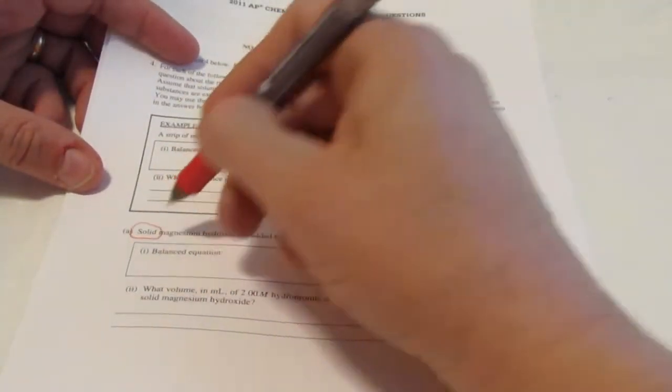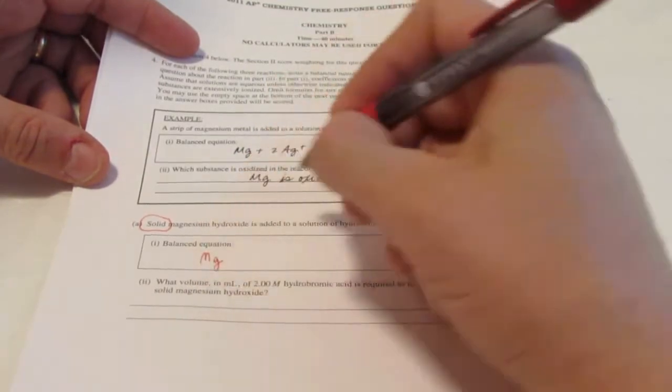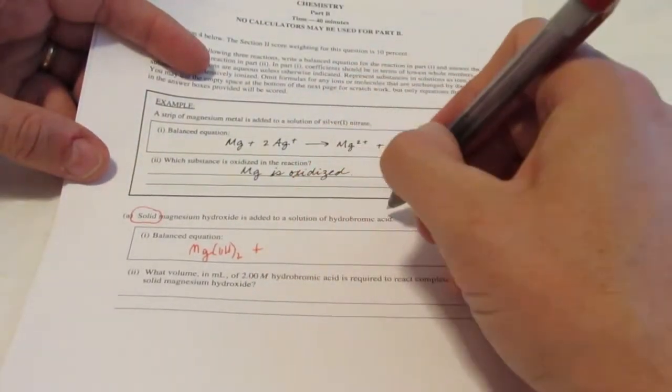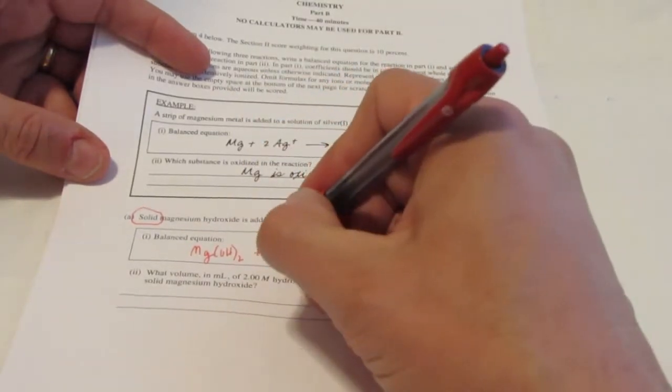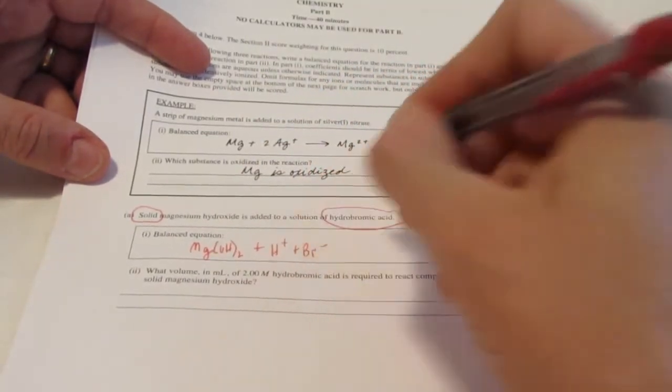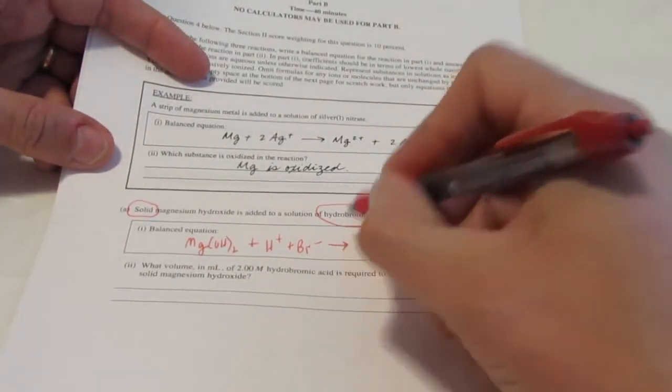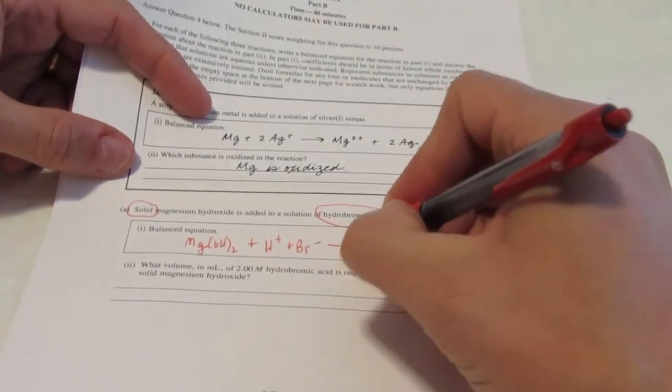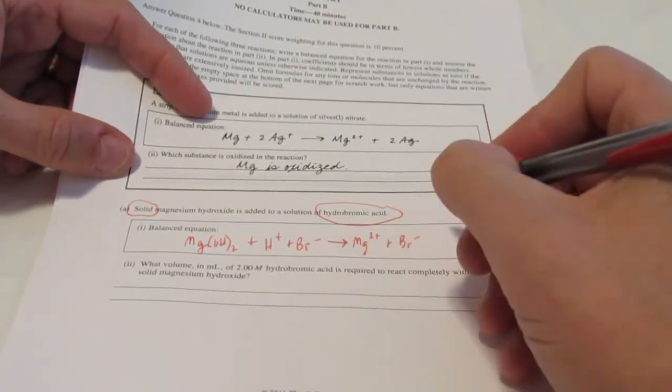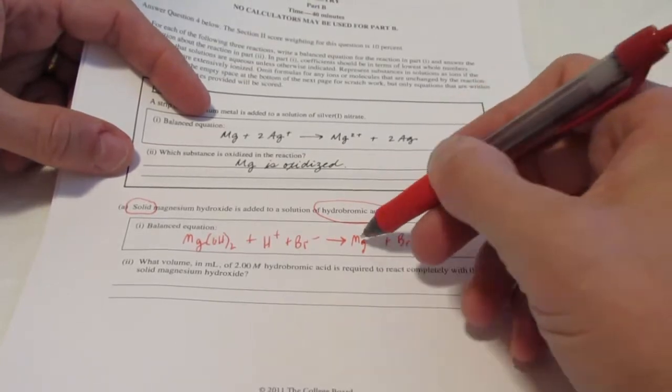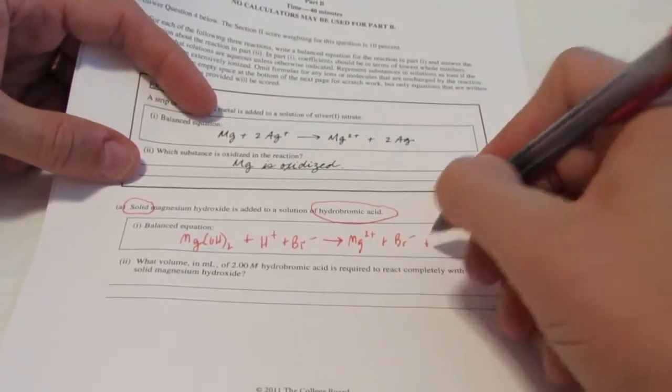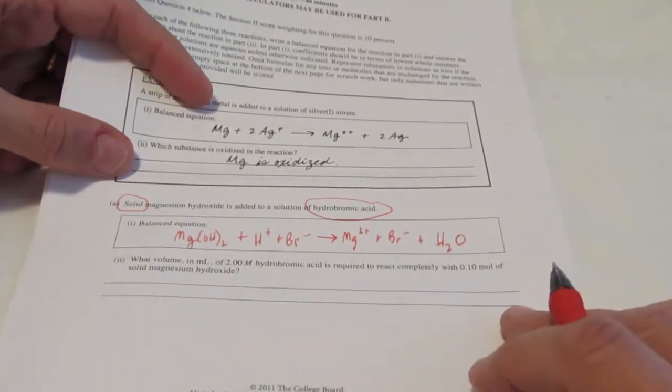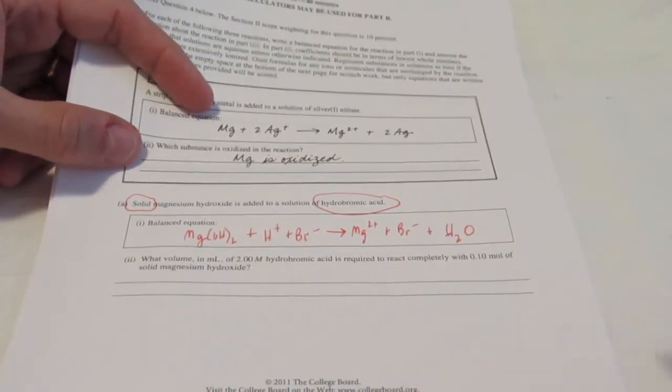Letter A, solid magnesium hydroxide. Once again, they're telling us it's a solid. They're giving us a big hint. Magnesium is two plus, hydroxide is one negative. So we have Mg(OH)2 is added to a solution of hydrobromic acid. Again, a strong acid kiddos. So we dissociate that into H+ and Br- ions. So let's see what we end up here. We're going to end up with a double replacement reaction. Mg and Br. So we're going to get Mg2+ and Br-. That's soluble. All bromides are soluble except for silver, mercury, and lead. And H+ and OH get together. So we will make H2O. So there's my skeleton equation. It's not quite balanced yet.